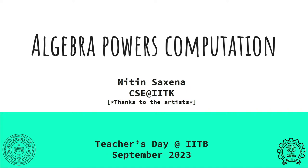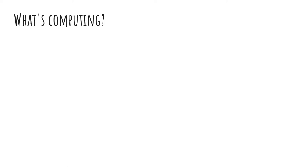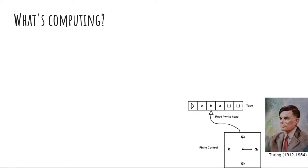So what is computing? This was asked many times in many forms, and ultimately it was answered most convincingly by Turing, by defining computation in terms of a mathematical model — a machine now called the Turing machine. Alan Turing postulated a simple, very general mathematical model for computing.